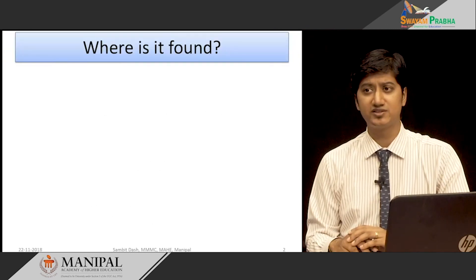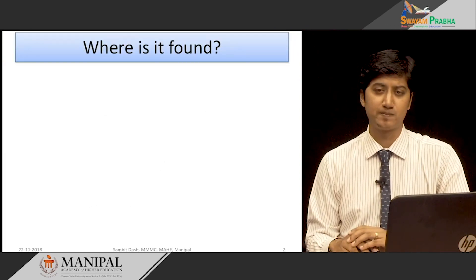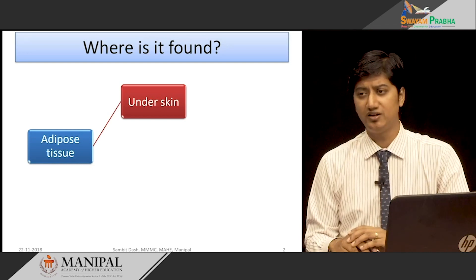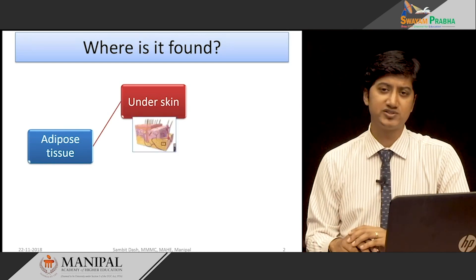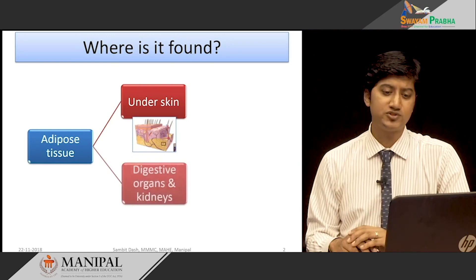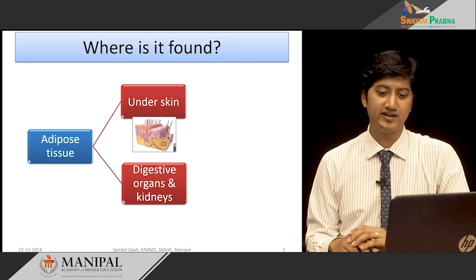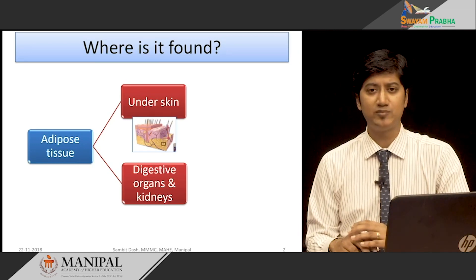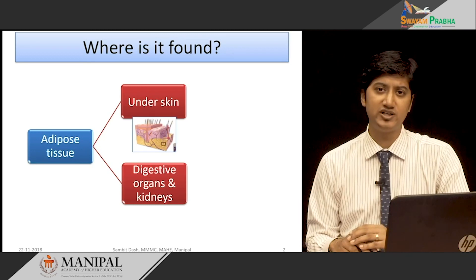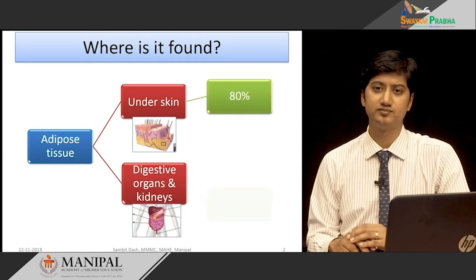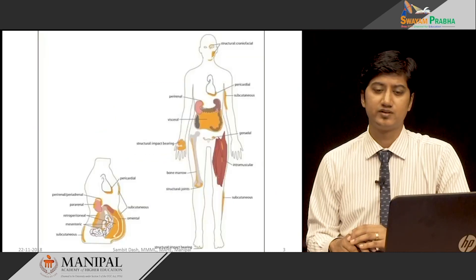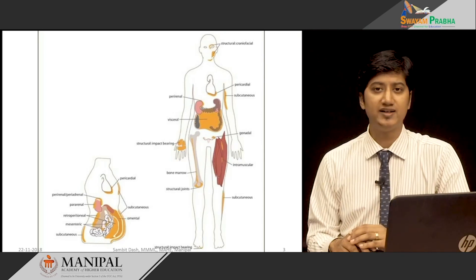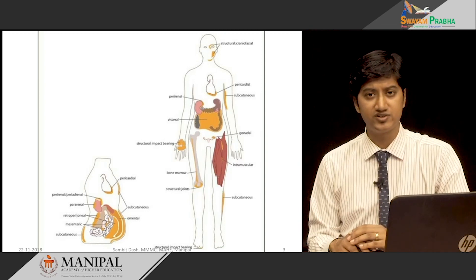Where is adipose tissue found? Adipose tissue is largely found in the subcutaneous region under the skin, and that comprises 80% of body fat. The adipose tissue around the digestive organs like stomach, intestines, and including kidneys comprises the intra-abdominal region, which makes up 20% of body fat. The majority of adipose tissue is found in the abdominal and scapular region in the upper body, and the gluteal and femoral region in the lower body.